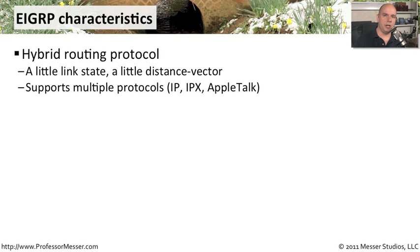We often call EIGRP a hybrid routing protocol. It not only looks at whether a link is up or down, which would be a link state protocol, but it also takes into consideration other metrics — for instance, how much bandwidth or how far away a particular link is — which gives us a few different types of distance vector characteristics as well.